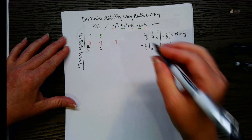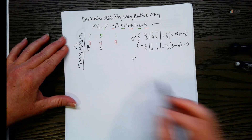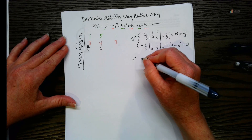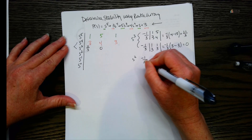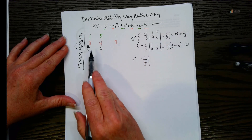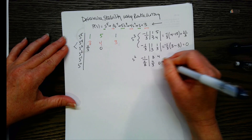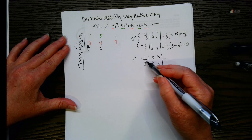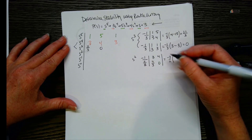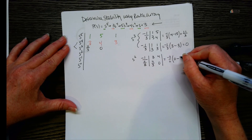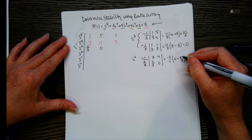Now for the s-squared row, we use the same procedure but with the two rows above it. The coefficient is negative one over the first element of the row above, which is eleven over three — so negative three over eleven. The determinant uses three, four, eleven over three, and zero: three times zero is zero, minus four times eleven over three gives negative forty-four over three. The threes cancel and the negatives cancel, giving us positive four.